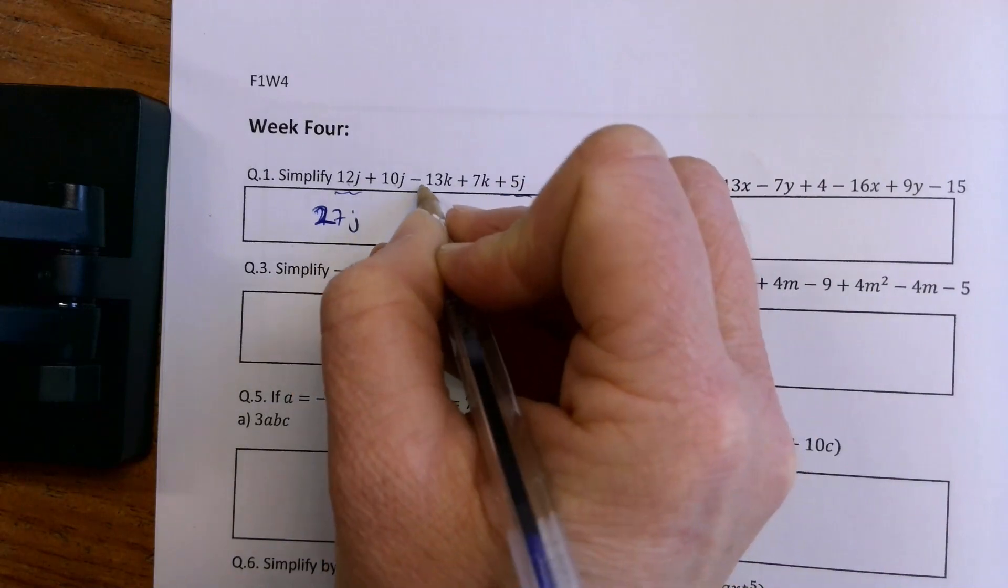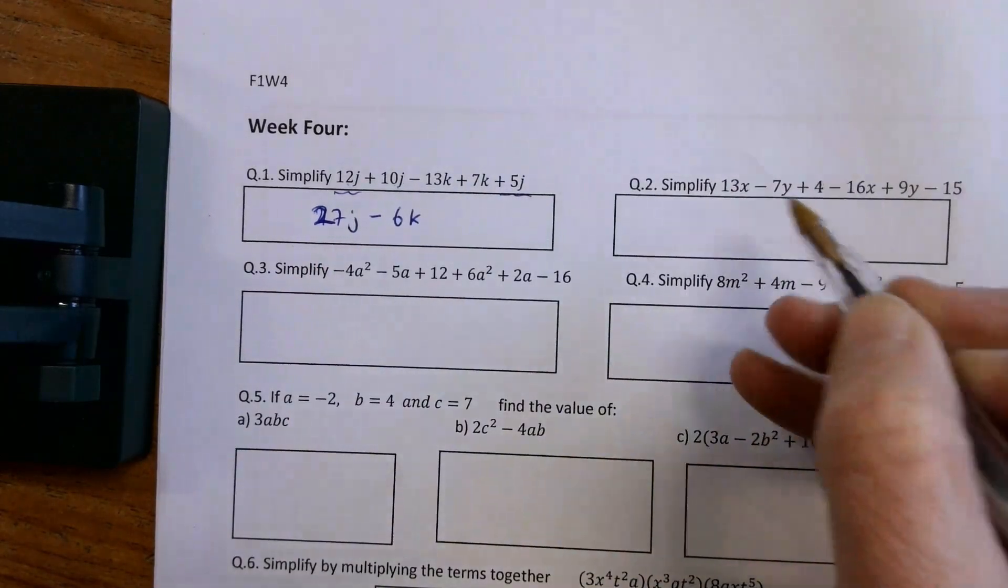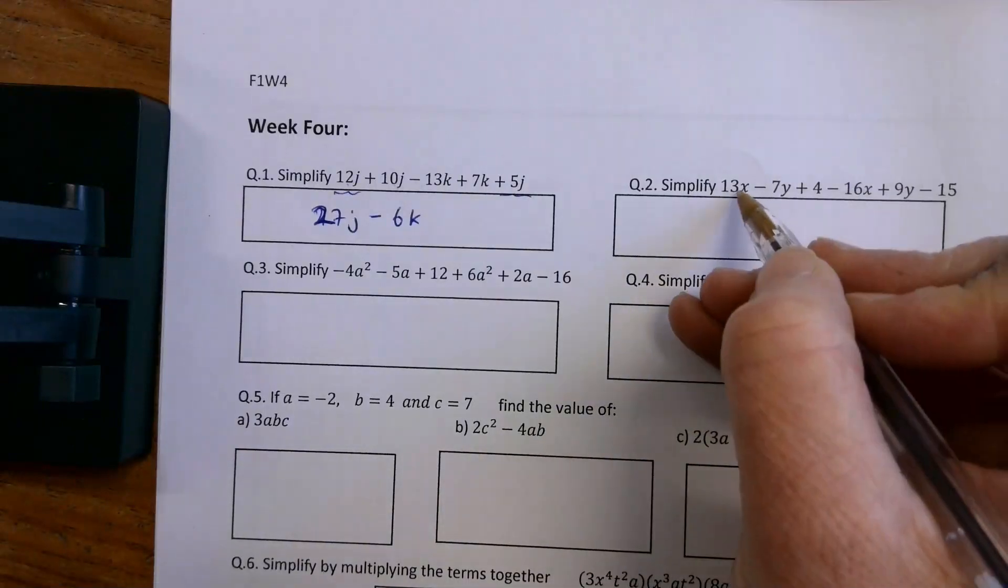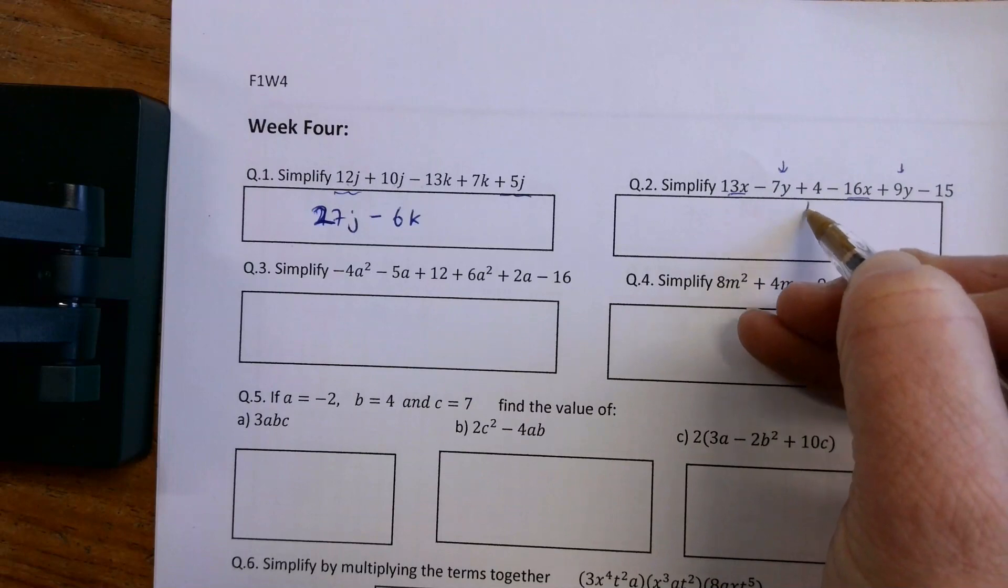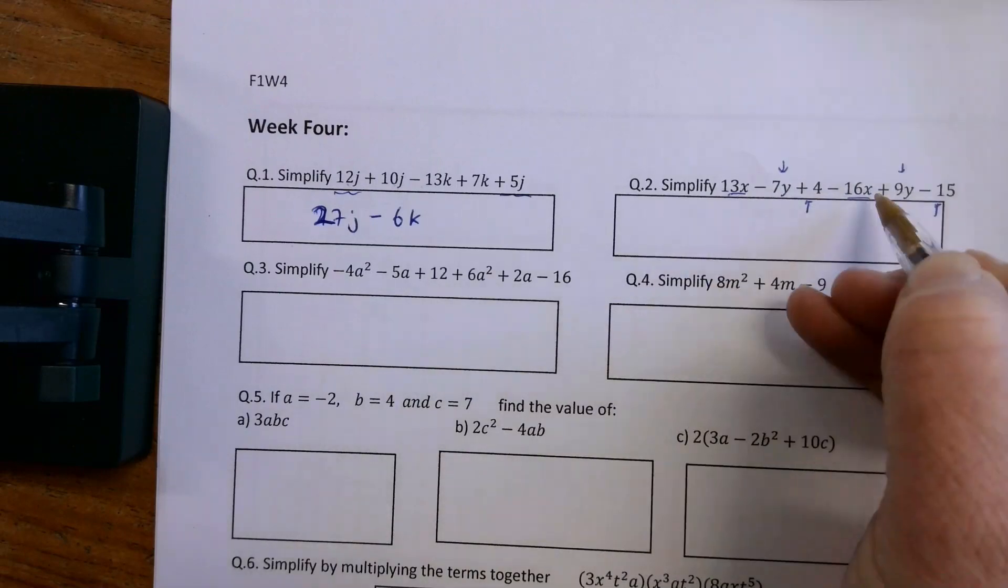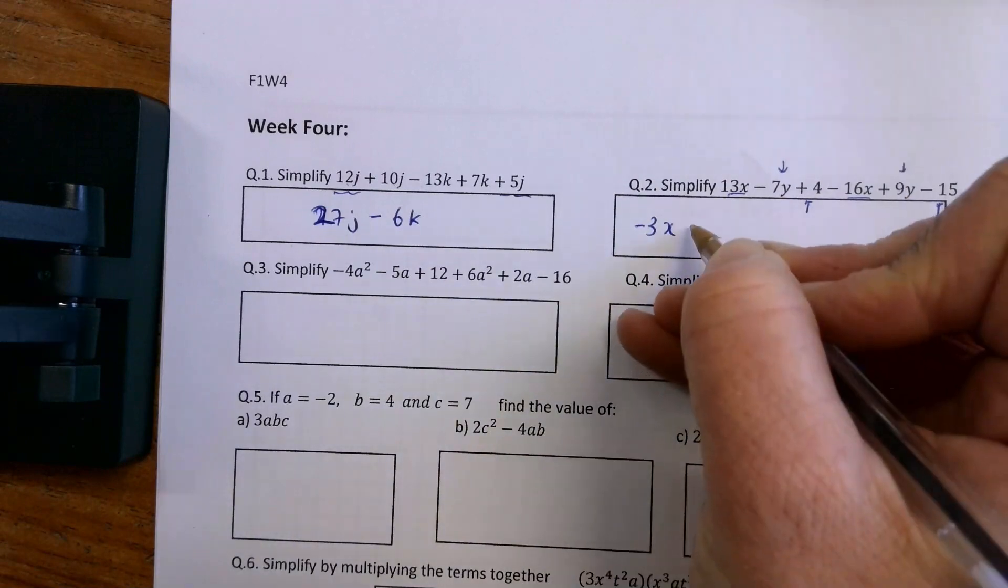And we also have minus 13K plus 7K is minus 6K. Again, simplifying here, I've got X's, I've got Y's, and I've got numbers. So 13X minus 16X is minus 3X, minus 7Y plus 9Y is plus 2Y,